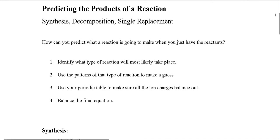Those four steps should allow you to predict the products of any type of reaction. This is incredibly helpful to all chemists because you don't want to do something blindly. It is often dangerous when you try to do science blindly. Let's go ahead and try to apply these four steps: identify, use patterns, periodic table, and balance it out.